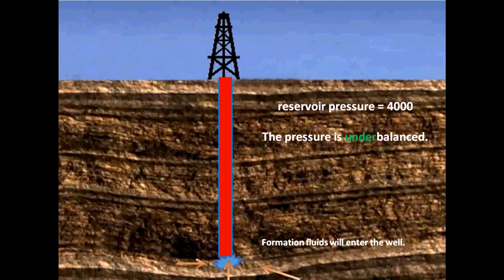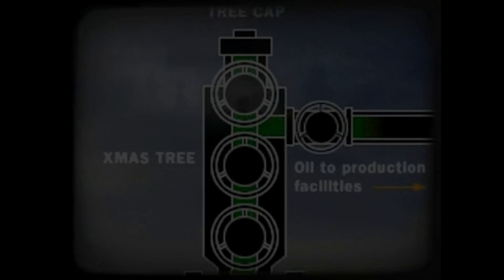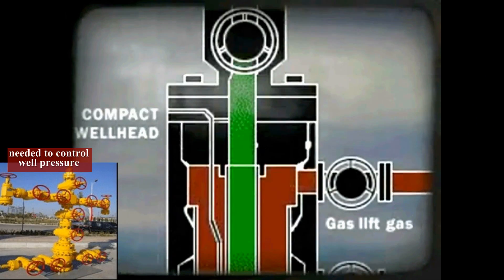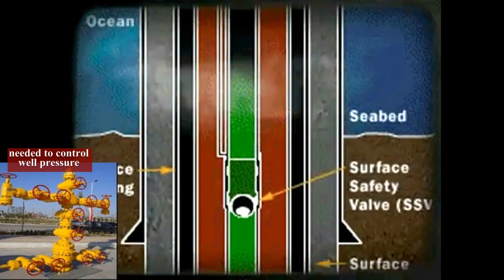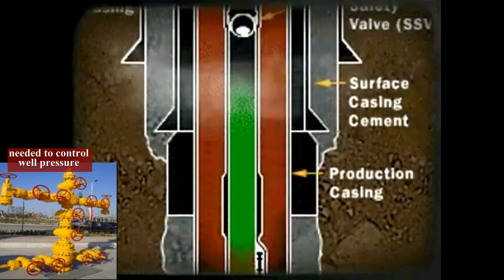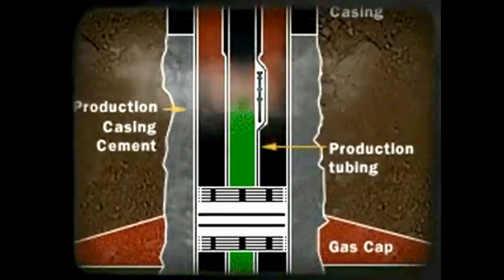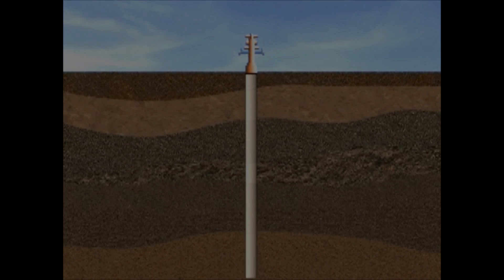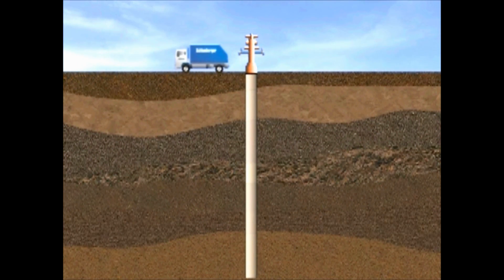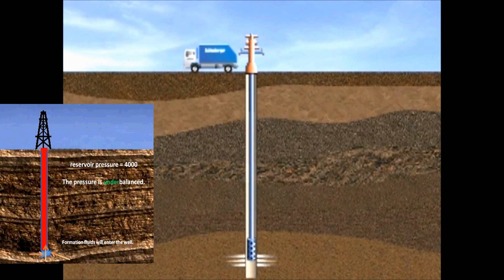If they elect to perforate in under-balanced conditions, the well has to be made ready with tubing, packers, and a Christmas tree to control the pressure required for under-balanced perforating. Since we have now explained the components used to prepare a well for production, we can now proceed with explaining how a well is perforated in under-balanced conditions.